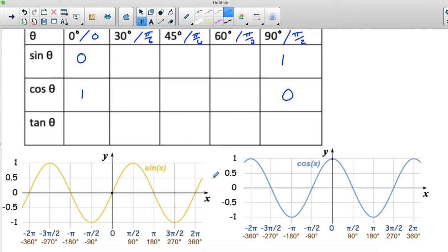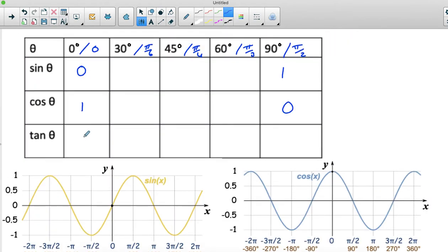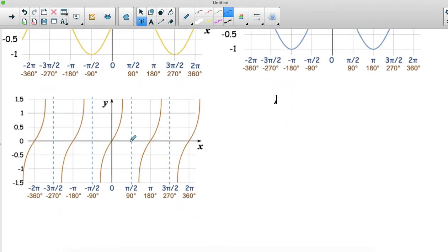For tangent, this is the tangent graph. When the angle is zero, tangent is zero. So we can fill that in straight away. But as the angle is approaching 90 degrees, the tangent of 90 is basically undefined. You've got an asymptote. As the angle approaches 90, the tangent ratio approaches infinity.